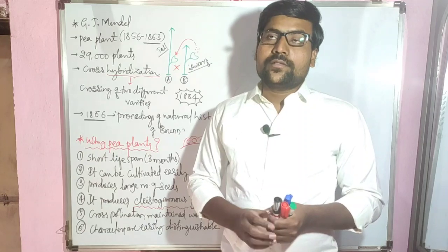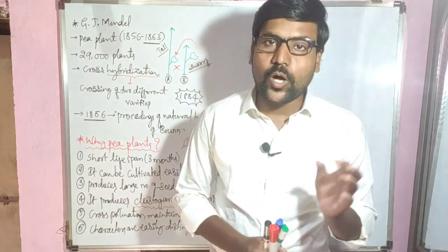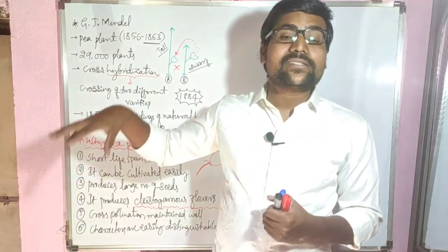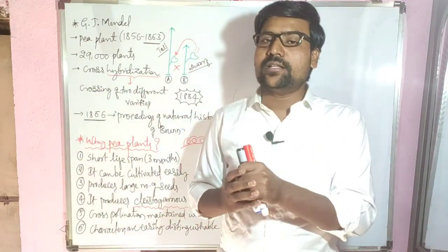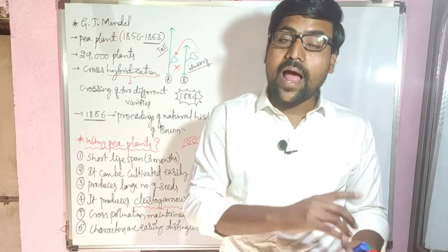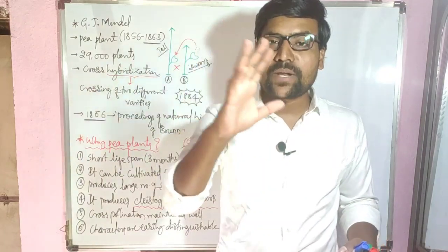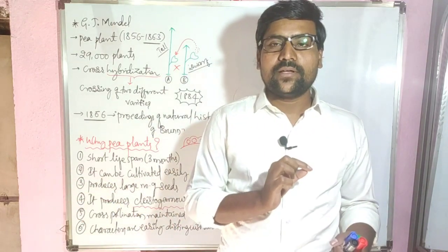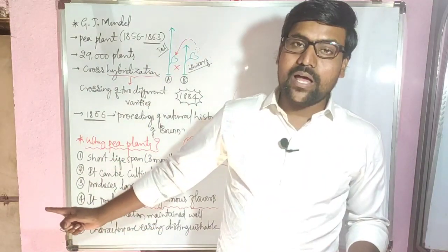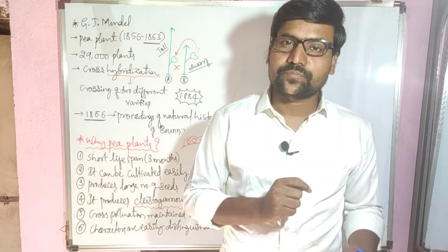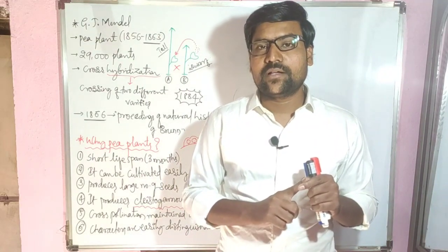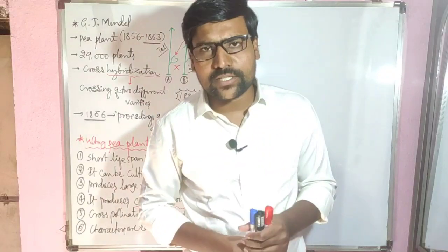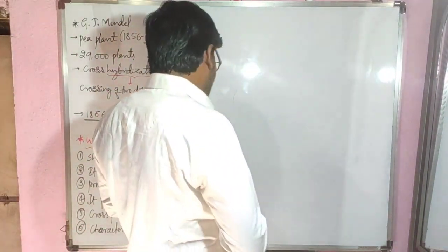Another scientist in this chapter is Thomas Hunt Morgan (TH Morgan). He experimentally proved what Mendel suggested — Mendel's rules and laws. TH Morgan is considered the father of experimental genetics. He worked on the insect Drosophila melanogaster, while Mendel worked on the pea plant.